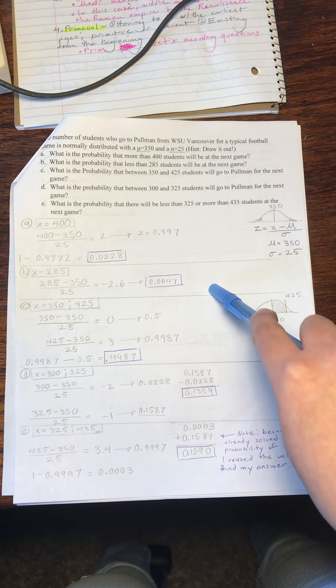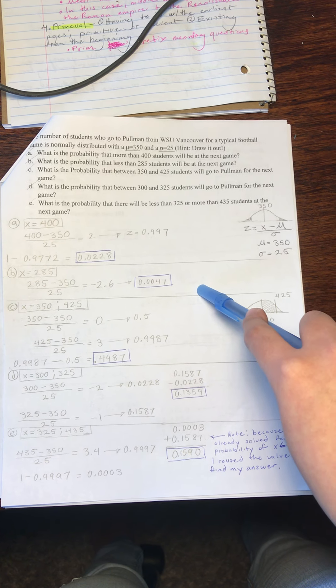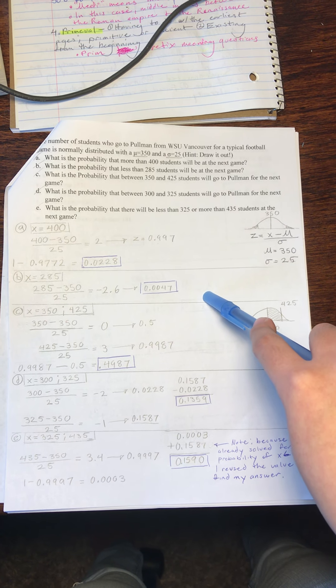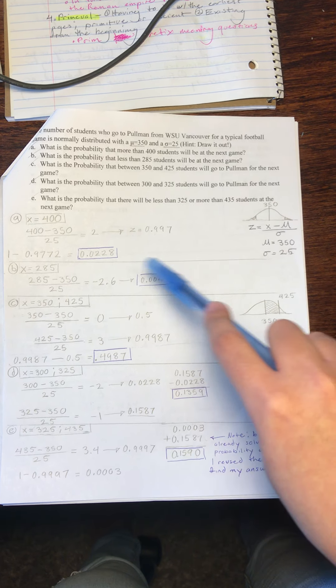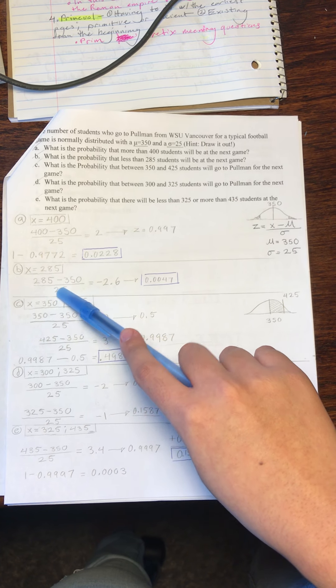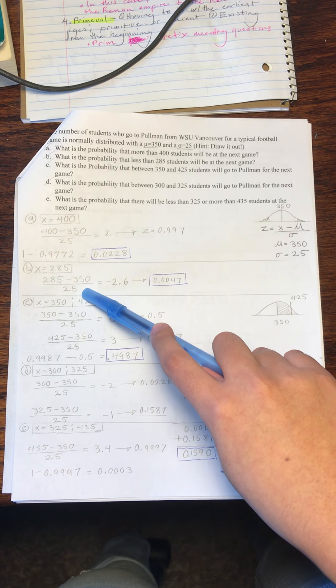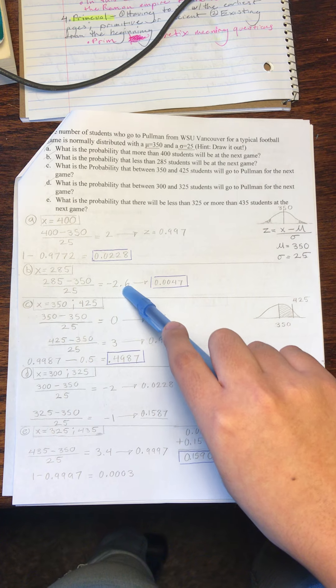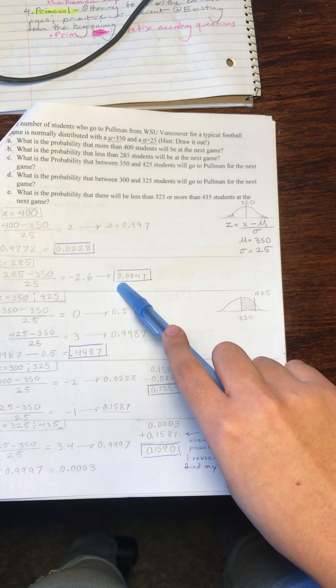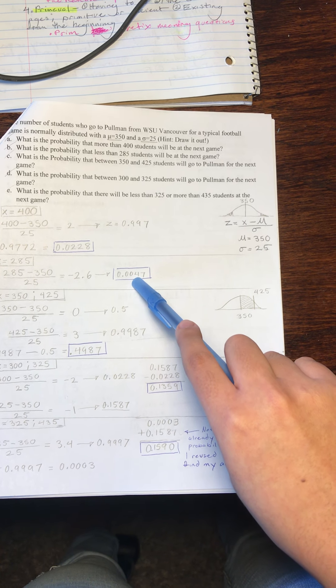We will solve now for part B, the probability that less than 285 students will be at the next game. We will take 285 minus 350, divide that by 25, and we end up with a result of negative 2.6. That gives us a result of 0.0047.